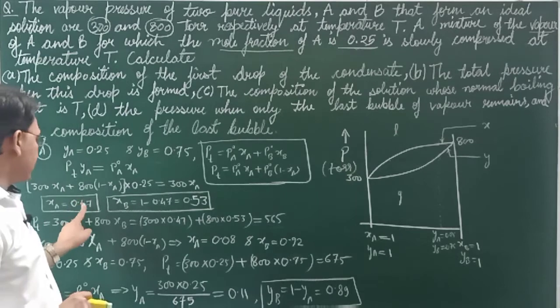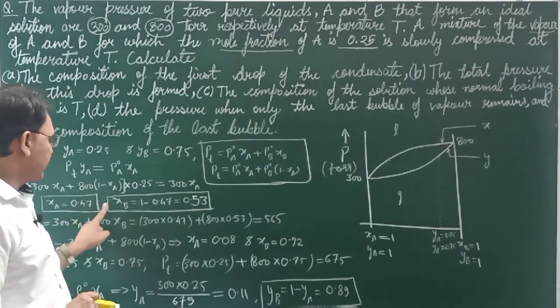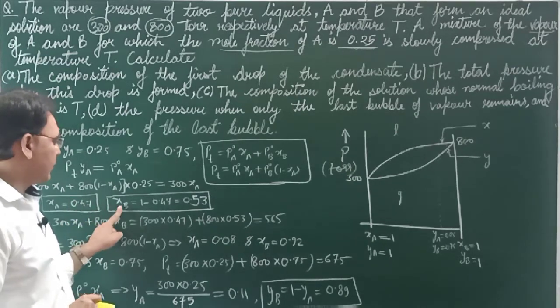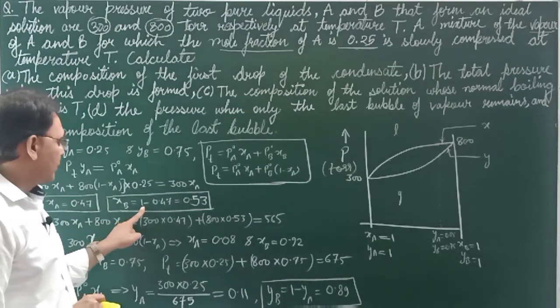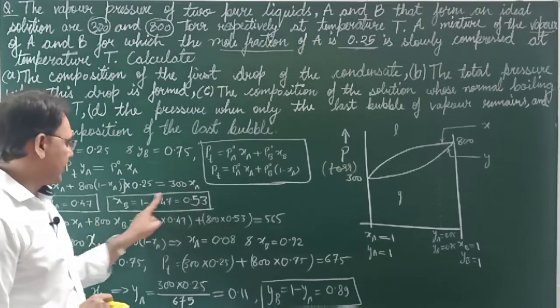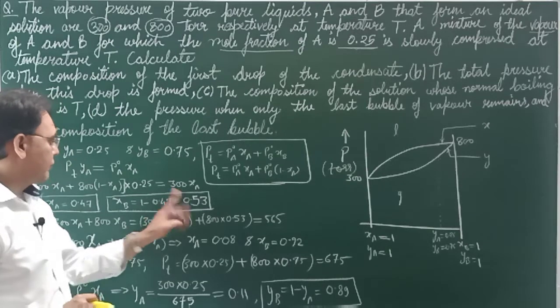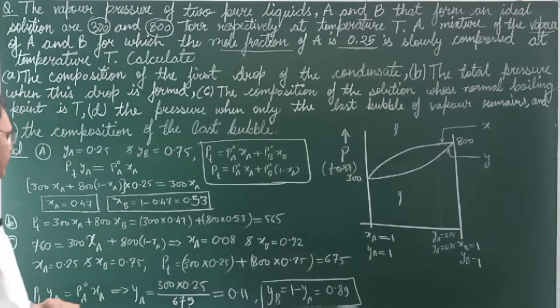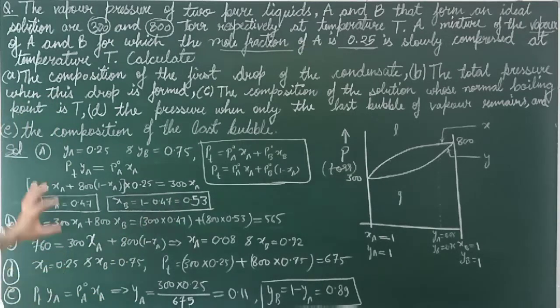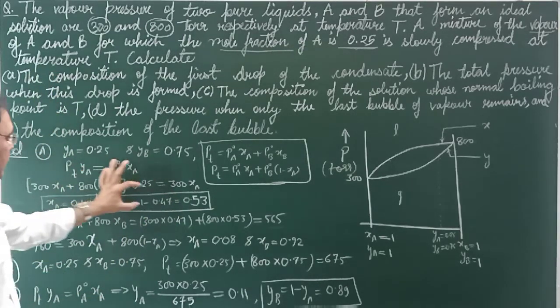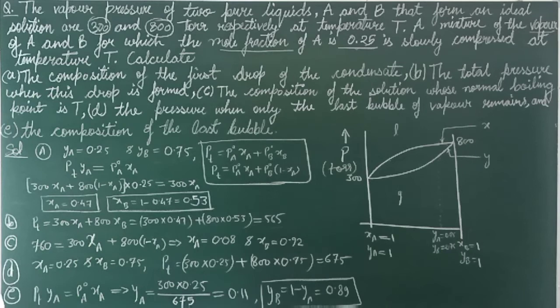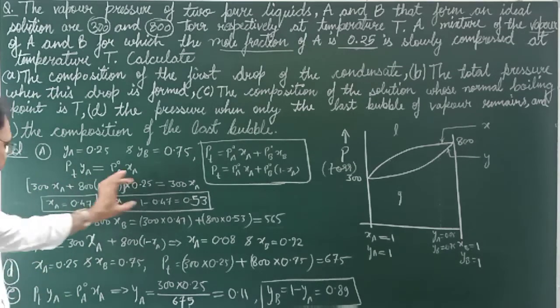So x_A = 0.47, and subtracting from 1 gives x_B = 0.53. That was the first part — the composition of the first drop of condensate in the liquid phase: x_A = 0.47, x_B = 0.53.